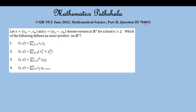Let x equal to (x1, ..., xn) and y equal to (y1, ..., yn) denote vectors in Rn, for a fixed n greater than or equal to 2. Which of the following defines an inner product on Rn?